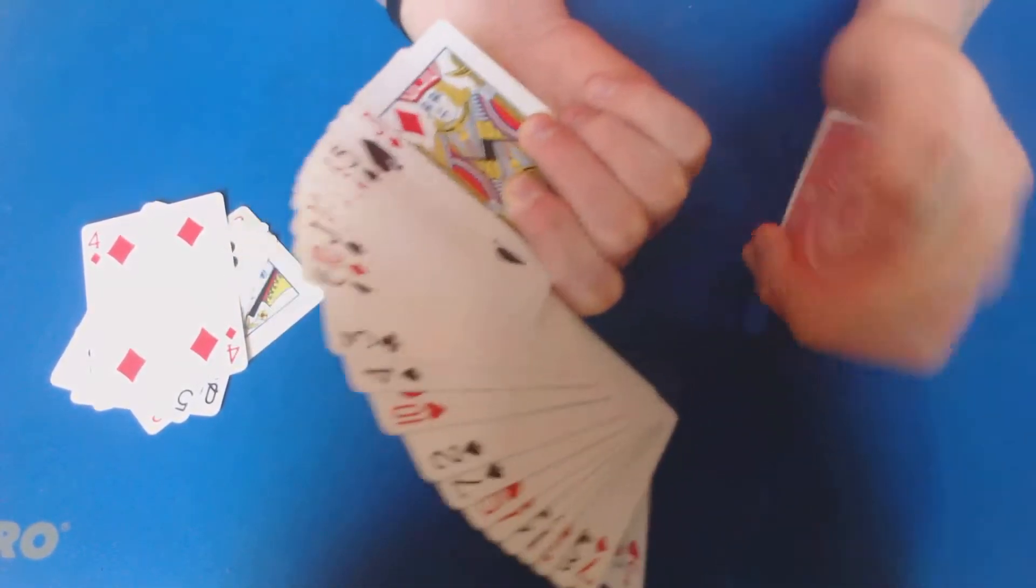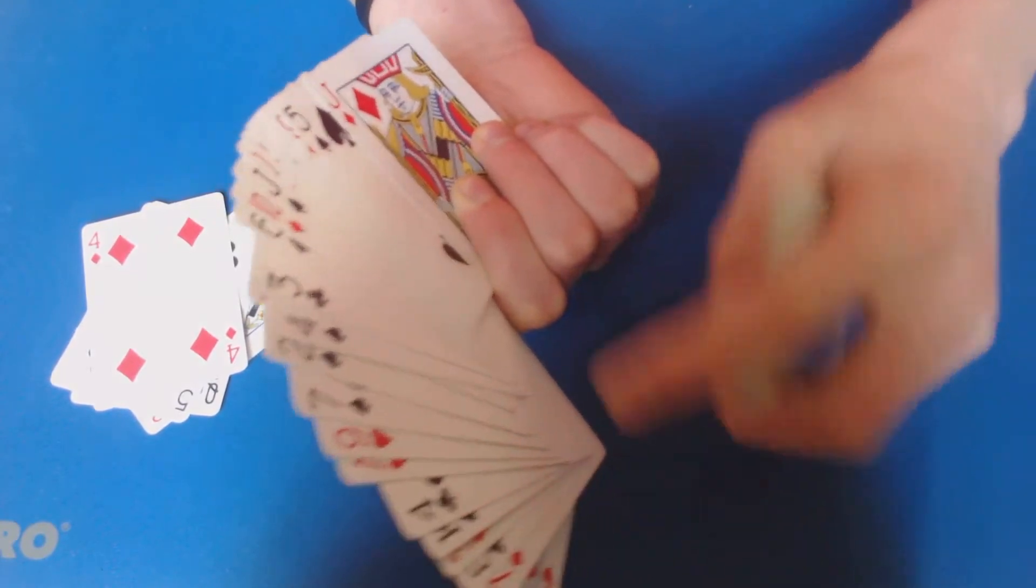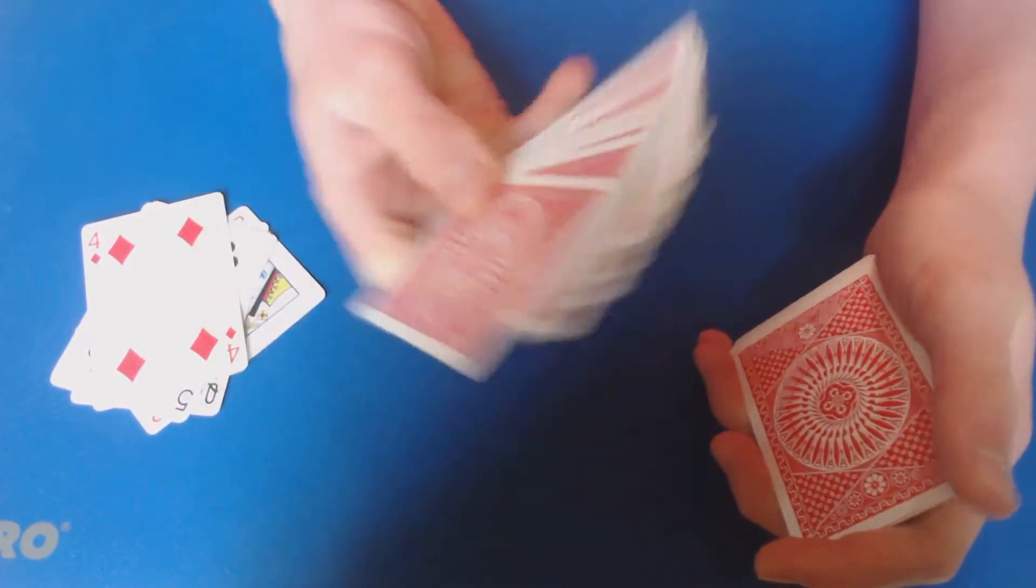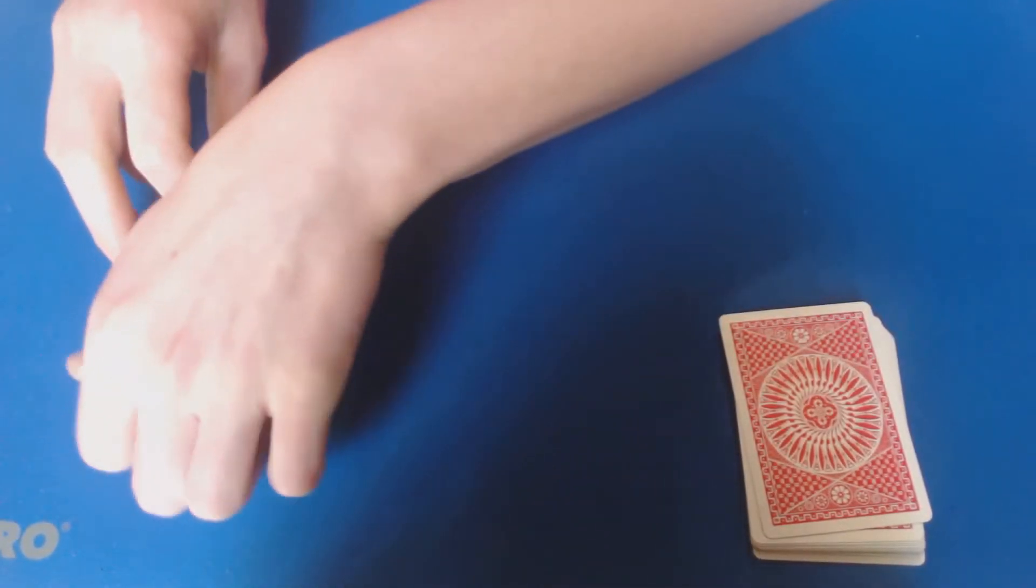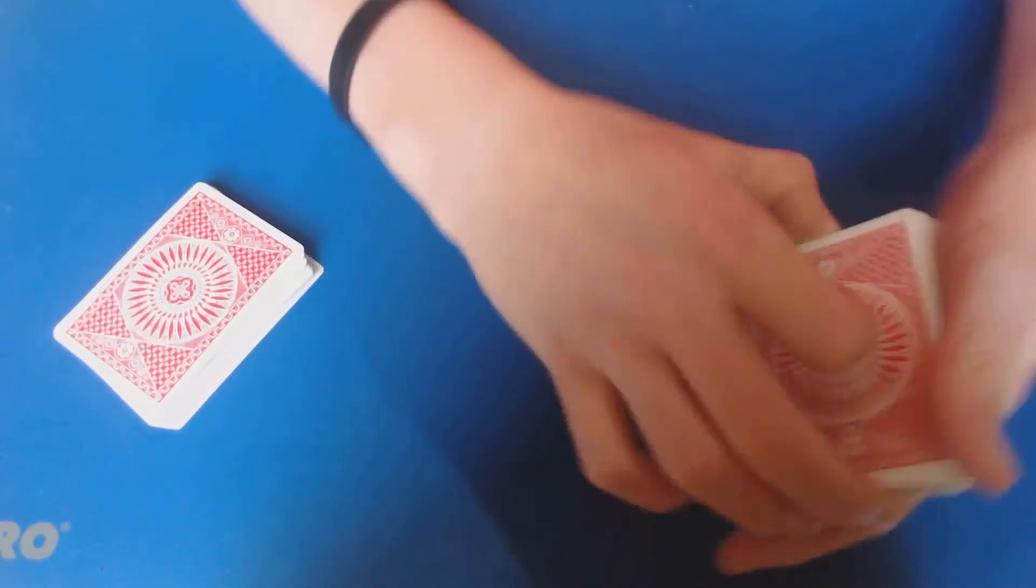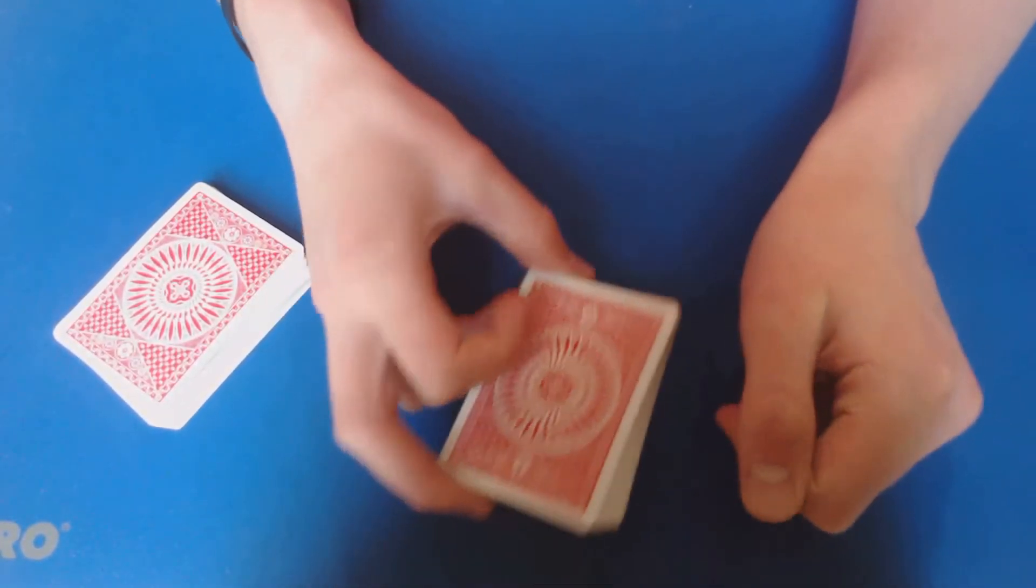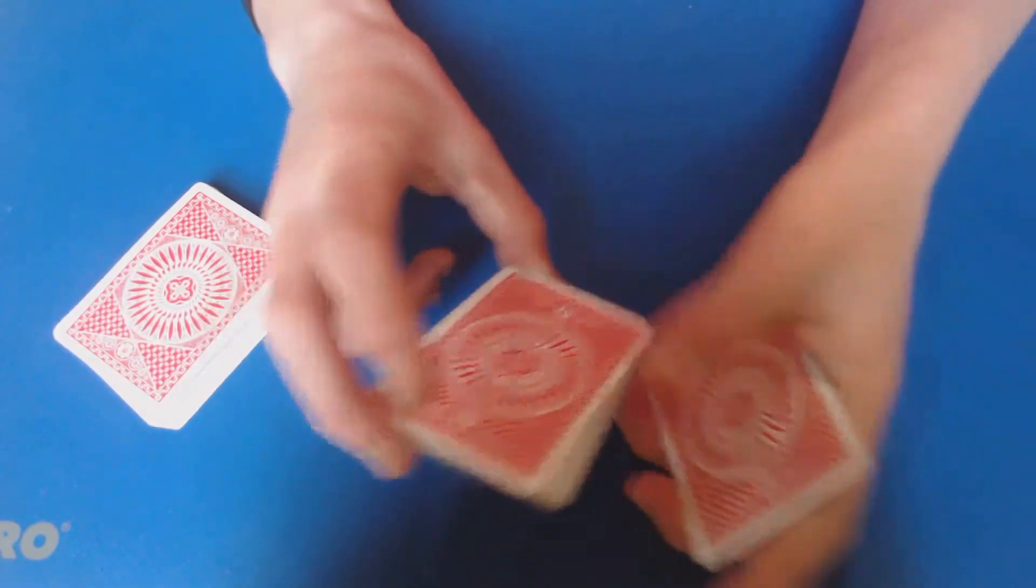Fan the half that doesn't contain their card and ask, is this yours? Now you could fan it, spread it, whatever you want to do. Just ask them, are any of these yours? Let them look at it and they'll say no. Now go ahead, take this packet, turn it over, and then get back to here.